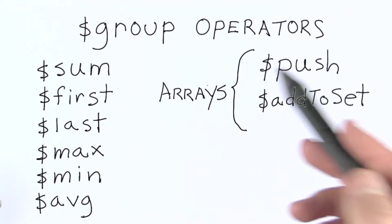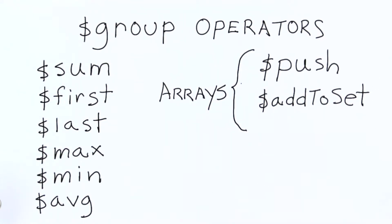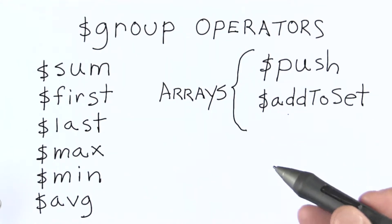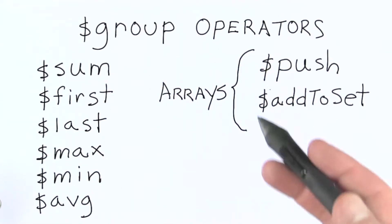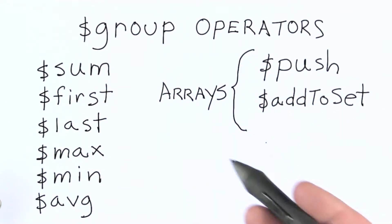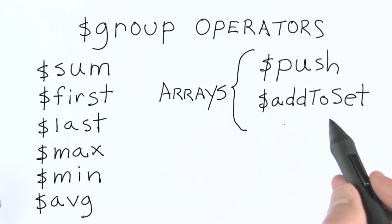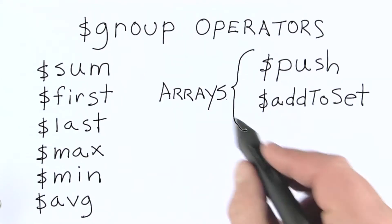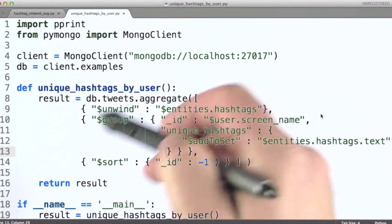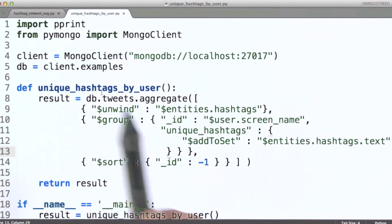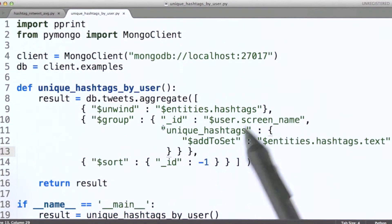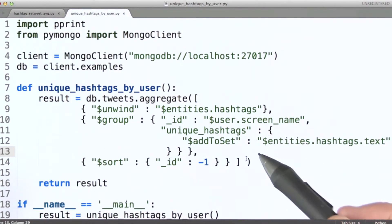Let's take a look at an example involving add to set. Essentially, what add to set does as its accumulation function for a grouping is it adds values to an array, but does so by treating the array as a set — it won't add the same value more than once to the array we're accumulating in. In this example, what I'm doing is aggregating together all of the unique hashtags and grouping by the user's screen name. So this is essentially all of the hashtags that an individual user has used in their tweets, but we're ignoring hashtags that a user has used in multiple tweets.